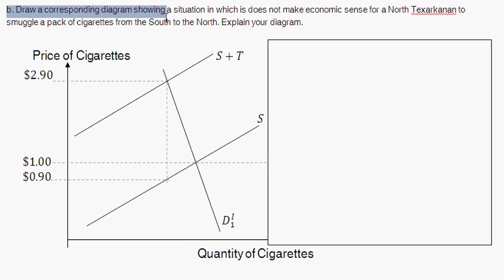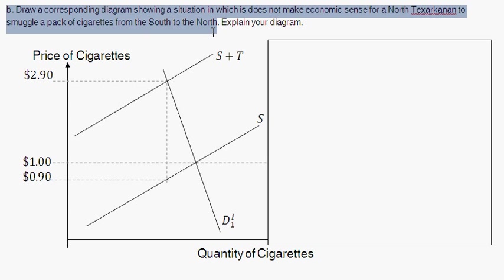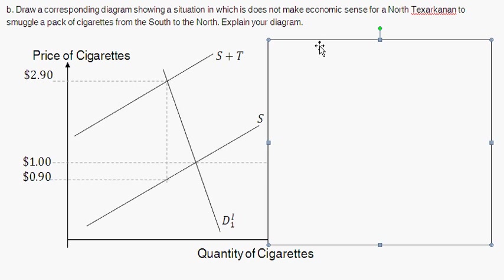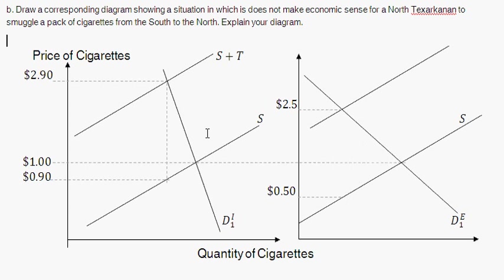Part B asks: draw a corresponding diagram showing a situation in which it does not make economic sense for North Texarkana to smuggle packs from the south to the north. The supply curve here is identical to the one in Part A, and the shifted supply curve is also the same. The only difference is the demand curve — labeled D with an E — which represents a fairly elastic demand curve. The initial equilibrium is once again at $1.